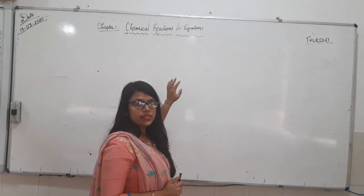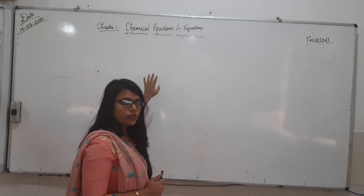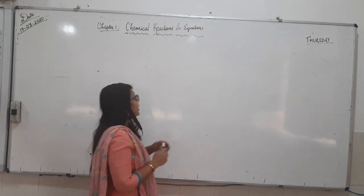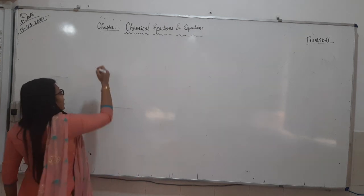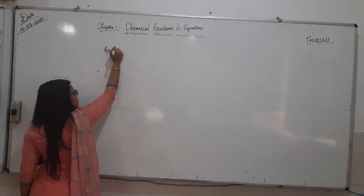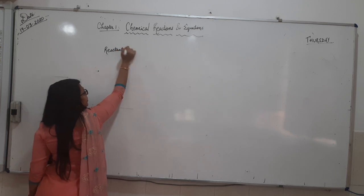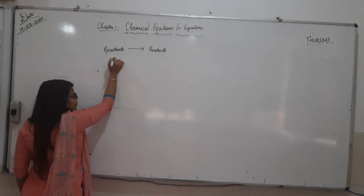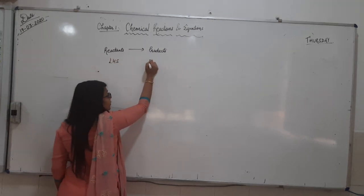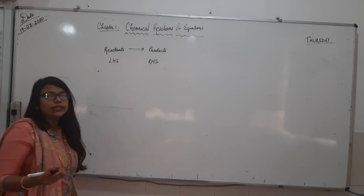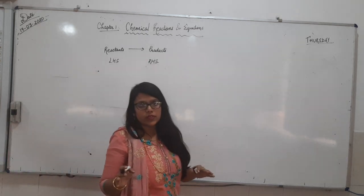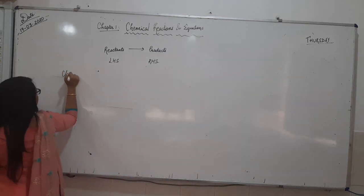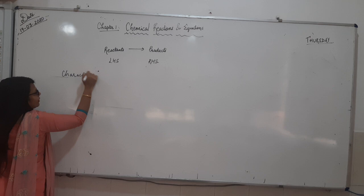Good afternoon children. Today we will start with a new session — Chapter Number 1: Chemical Reactions and Equations. In this chapter, we know that in a chemical reaction, reactants are converted to products. We write the reactants on the left hand side and the products on the right hand side. To determine that a reaction is taking place, we have characteristics of chemical reactions.